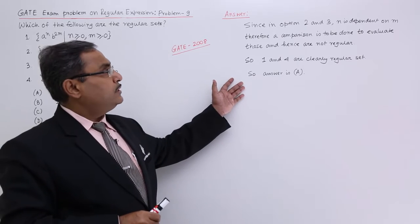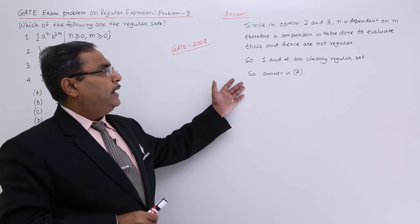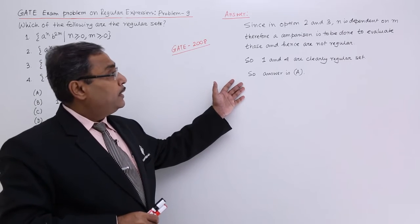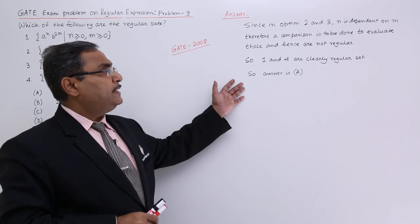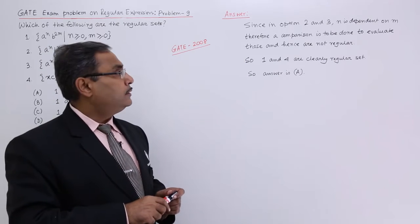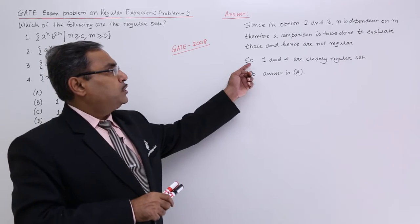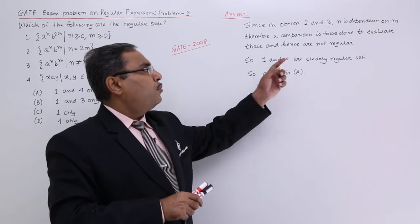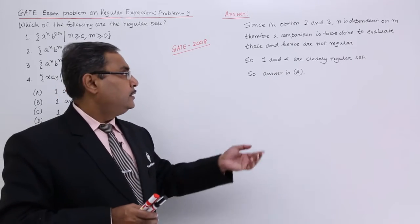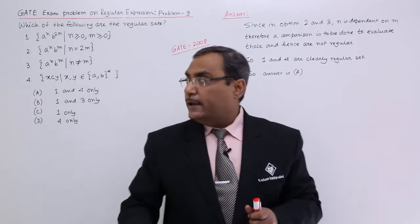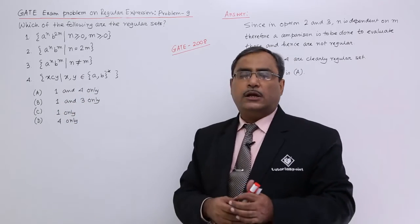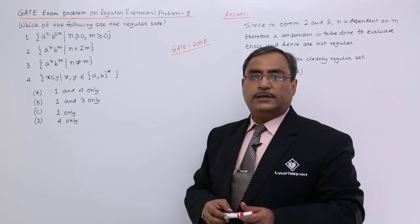Since in option 2 and 3 n is dependent on m, therefore a comparison is to be done to evaluate those and hence they are not regular. Option number 1 and option number 4 are clearly the regular set as I discussed earlier. Answer will be A because answer A is telling that 1 and 4 are regular and other options are not valid in this particular case study.